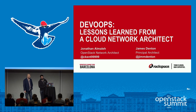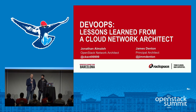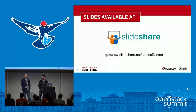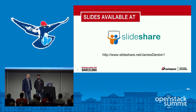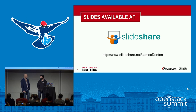All right everybody, thanks for coming. This is DevOps: Lessons Learned from a Cloud Network Architect. I'm James Denton, a principal architect for Rackspace. My name is Jonathan Al Malley, I work with James as a network architect. After the presentation we're going to throw the slides up on SlideShare, so don't feel like you have to take notes — we'll have them all for you.